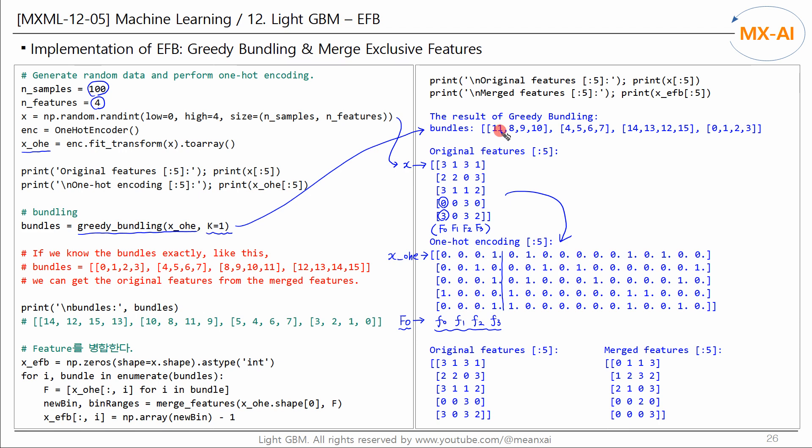These features are bundled together. The second and fourth bundles are correct, but the first and third bundles are incorrect. The order is incorrect. This is because the greedy bundling is an approximate algorithm.